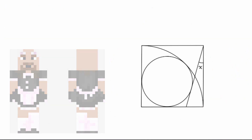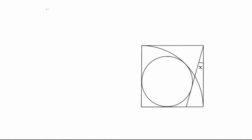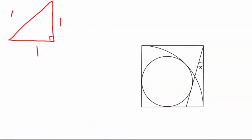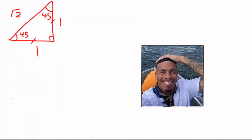Before we start this, we must remember three things. The right triangle is a 45-45-90 triangle. That means that the angles of the triangle must be 90, 45, 45. The ratio between the sides must be 1 to 1 to root 2.